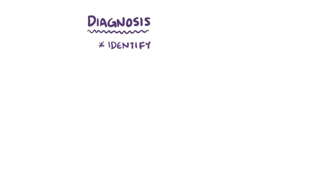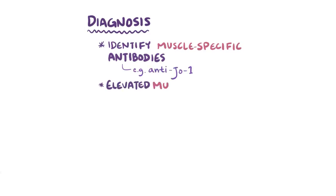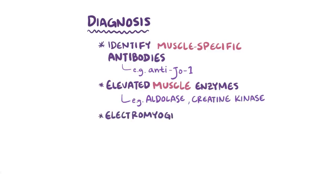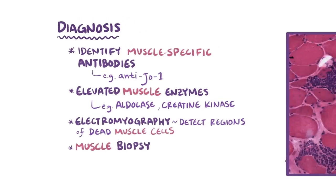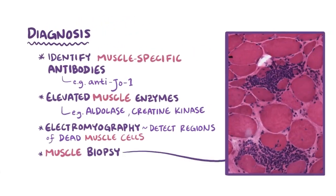Diagnosis is based on identifying myositis-specific antibodies, like anti-JO1, as well as elevated serum levels of muscle enzymes like aldolase or creatine kinase. Additionally, electromyography can be used to detect regions of dead muscle cells that cause abnormal electrical signal conduction. A muscle biopsy can also show inflammation in varying stages of necrosis.